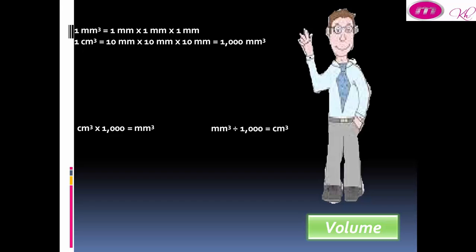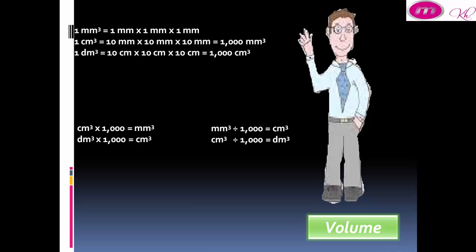When we change from millimeter cube to centimeter cube, we divide by 1,000. One decimeter cube equals 10 cm by 10 cm by 10 cm, equal to 1,000 centimeter cube. When we change from decimeter cube to centimeter cube, we multiply by 1,000. When we change from centimeter cube to decimeter cube, we divide by 1,000.